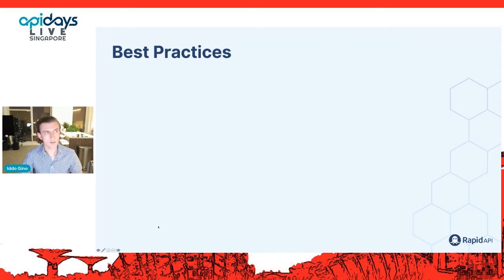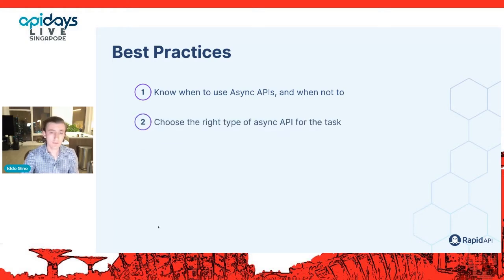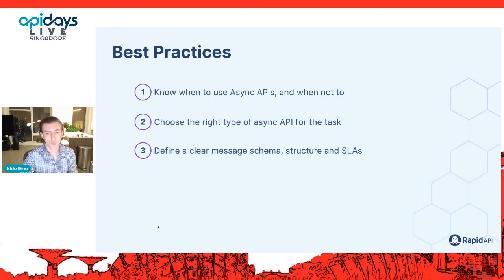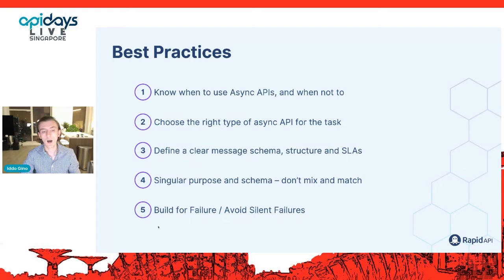Moving on to best practices from our experience supporting customers deploying large amounts of async APIs, and from deploying them ourselves throughout the Rapid API architecture — here are five best practices: knowing when to use them and when not to; choosing the right type; defining message schemas, structures, and SLAs; thinking about singular purposes and schemas per API; and thinking about failure cases.